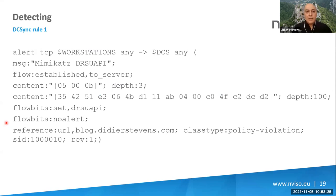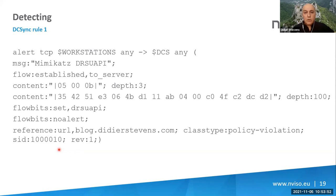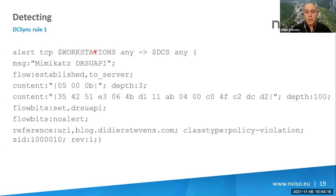Here is my first rule for packet A, the DRSUAPI bind detection for DC Sync. We alert on TCP traffic from workstations — and you should also include any member server that is not a domain controller — on any port to a domain controller on any port. The message is 'Mimikatz DRSUAPI.' The flow must be established and going to the server. We use any port because of the DCE RPC protocol — you don't know upfront which port will be used.